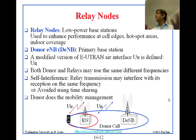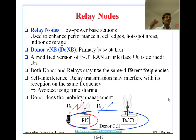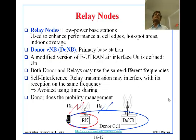Relay nodes are low-power base stations used to enhance performance at the cell edge, hot spot areas, and indoor coverage. A hot spot is if there is a big crowd and you need more capacity — you just put this small cell because the distance is very small compared to the main tower, so it provides much better coverage. Indoor coverage could be a mall or a hospital.